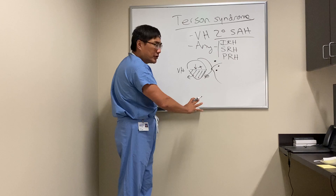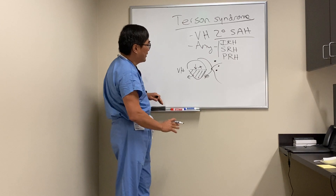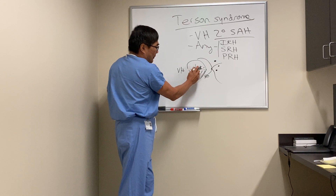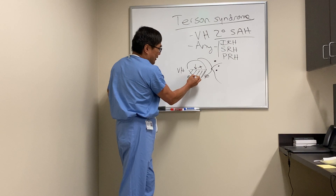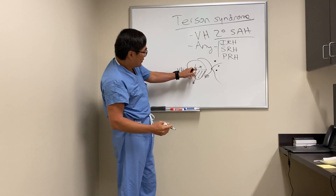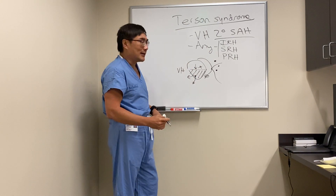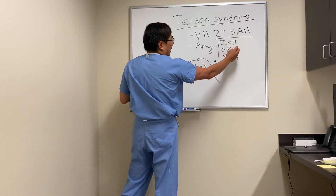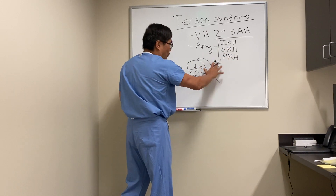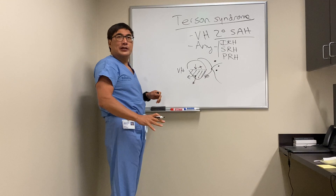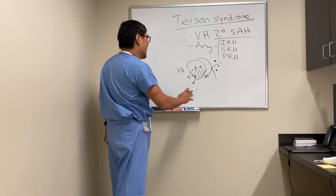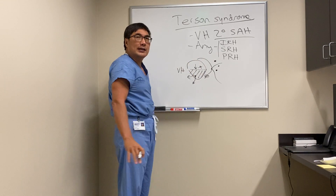If the hemorrhage gets out into the vitreous, it makes a vitreous hemorrhage with a more diffuse appearance. If a preretinal hemorrhage is blocking the macula, we might be able to do a YAG laser right there to let the blood drain out and clear up the macula. The other hemorrhages — intraretinal and subretinal — normally resorb on their own and are not really going to be symptomatic unless they're in the macula.